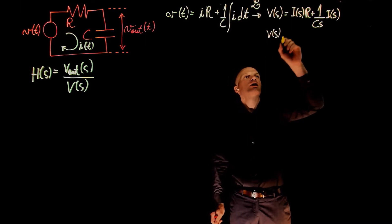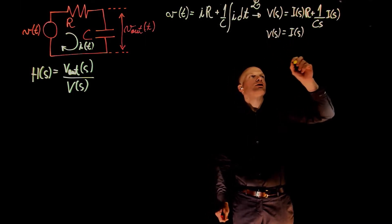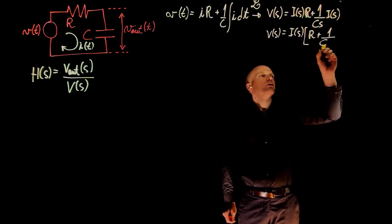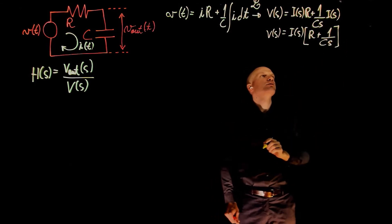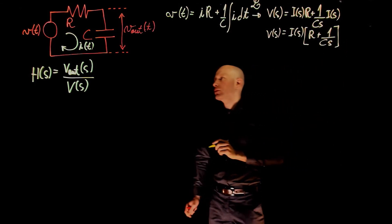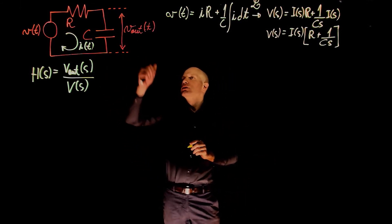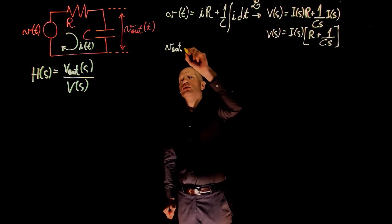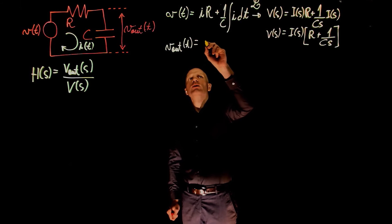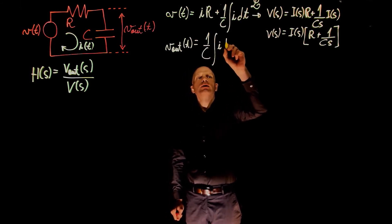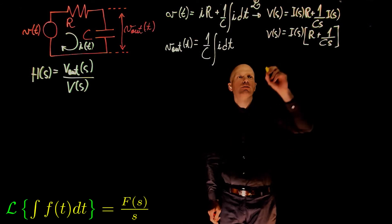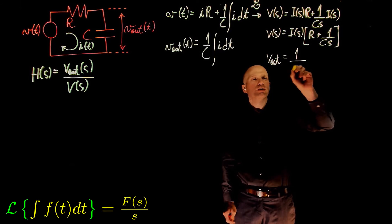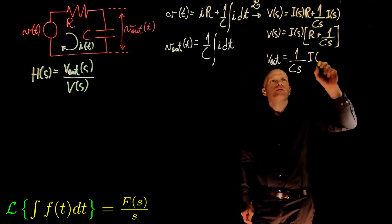We can isolate I of s to get V of s equals I of s times the quantity R plus 1 over Cs. Now we need to relate I of t to V out. V out of t is simply 1 over C times the integral of I dt, which in the frequency domain gives V out of s as 1 over Cs times I of s.